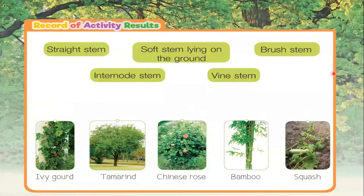Could you go outside? Can you see any plants around your house? Can you tell the teacher what the stem characteristics are of the plants you see? Is it a stretch stem, a vine stem, an internal stem with a hollow center, a soft stem that breaks easily and creeps on the ground, or a butch stem?